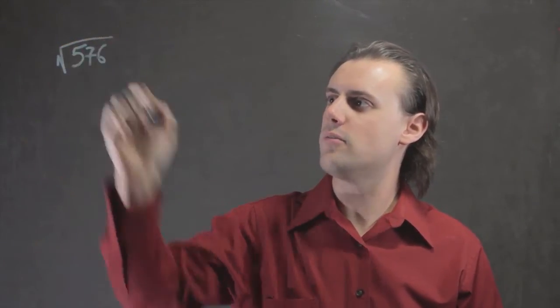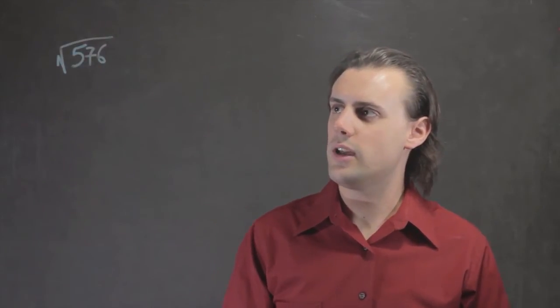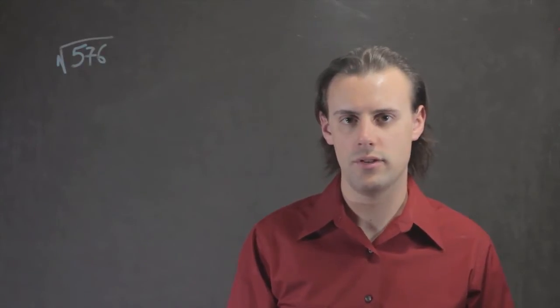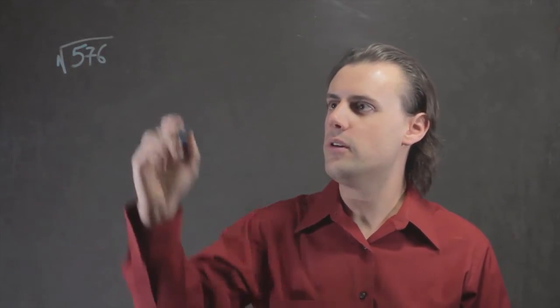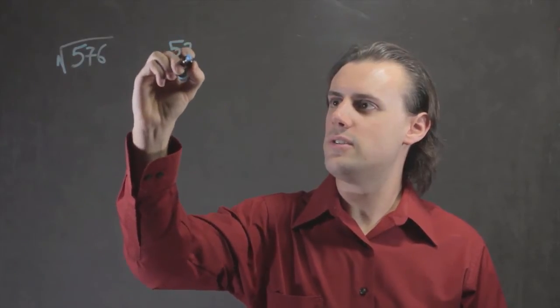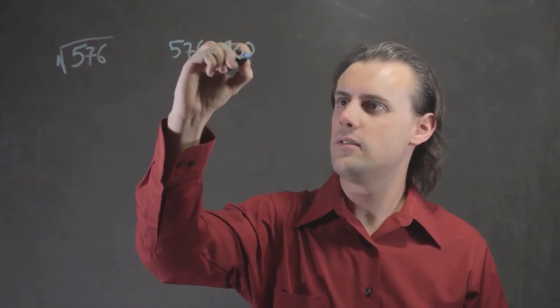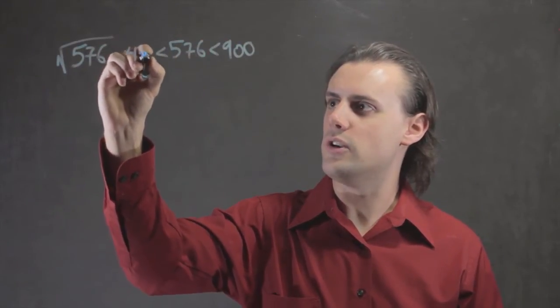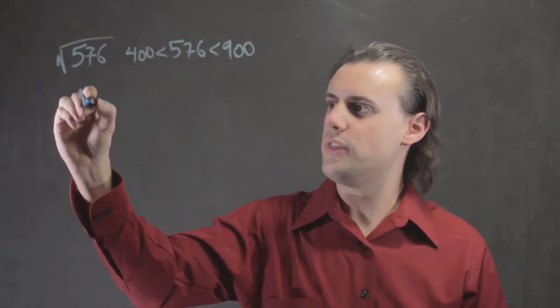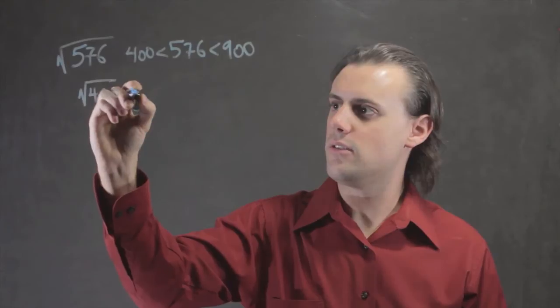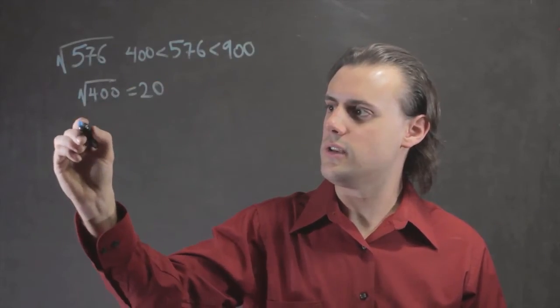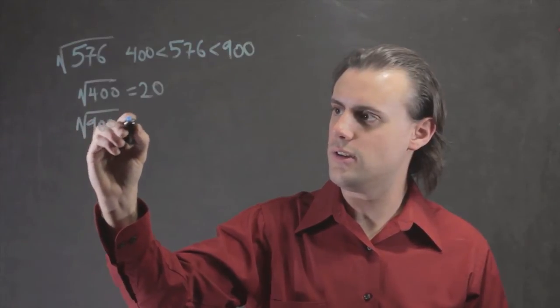My name is Walter Unglaub and this is how to estimate the square root with big numbers. If we have a big number like 576 and we want to estimate what the square root is, we can look for other large numbers whose square roots we know. For example, we know that 576 is less than 900 and larger than 400, and we know that the square root of 400 is 20 and the square root of 900 is 30.